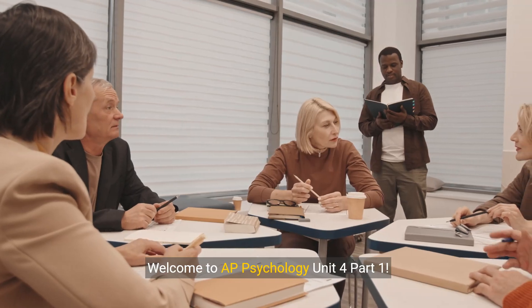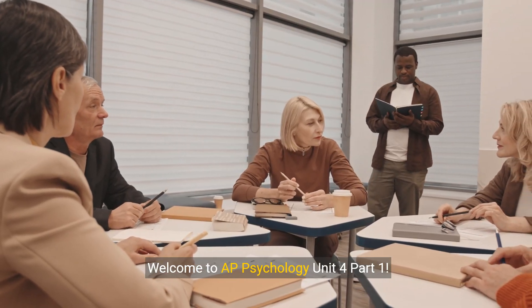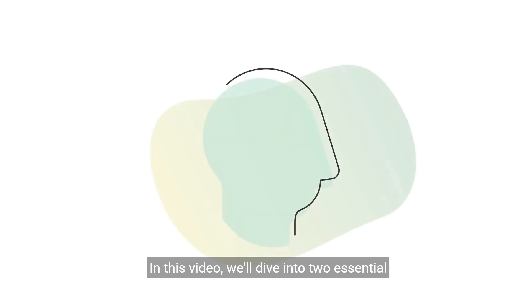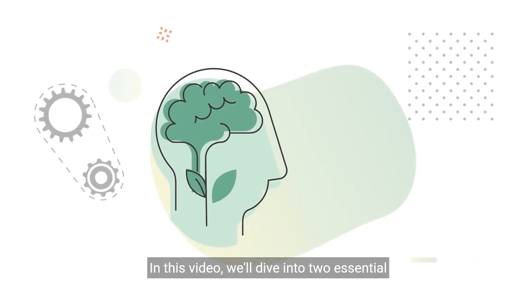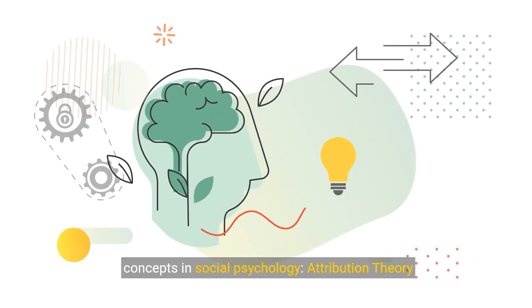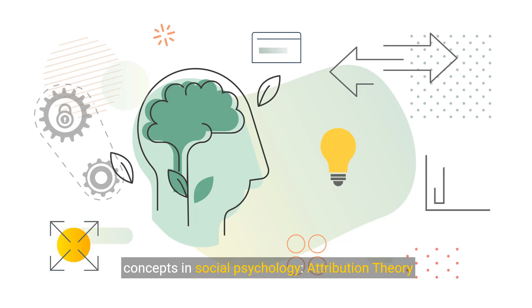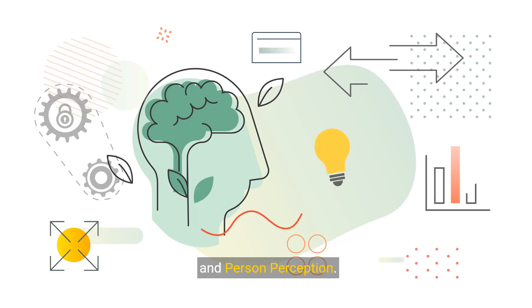Welcome to AP Psychology Unit 4, Part 1. In this video, we'll dive into two essential concepts in social psychology: attribution theory and person perception.